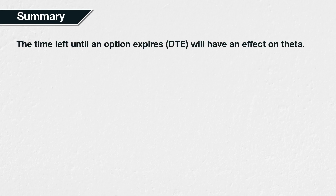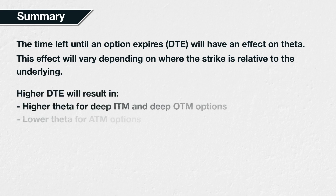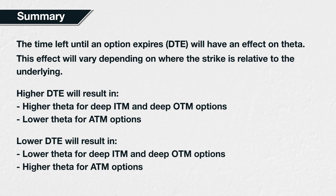In summary, the more time left until an option expires, the more time is left for the extrinsic value of the option to decay. The time left until the option expires, or days to expiry, will have an effect on the option thetas, and this effect will vary depending on where the strike price is in relation to the underlying price. Higher days to expiry will result in higher theta for both deep-in-the-money and deep-out-of-the-money options, but lower theta for at-the-money options. Lower days to expiry will result in lower theta for both deep-in-the-money and deep-out-of-the-money options, and higher theta for at-the-money options.